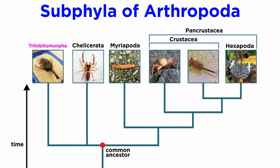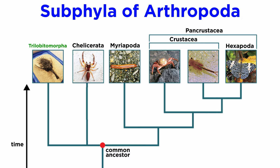Another issue is the exact placement of subphylum Trilobitomorpha, or Trilobita. We will refer to them as the sister taxon to all extant arthropods, but this placement has drawn some recent controversy that places the trilobites essentially between Chelicerata and Myriapoda. Four of the five arthropod subphyla — Chelicerata, Myriapoda, Hexapoda, and Crustacea — contain a massive diversity of extant species, and we will explore them in more detail shortly. However, since Trilobitomorpha contains only extinct arthropods, let's cover them briefly now.